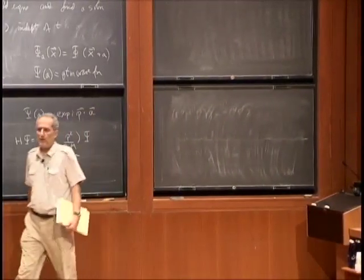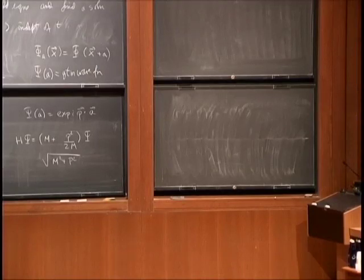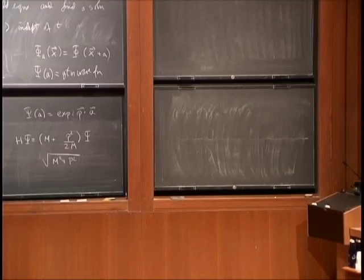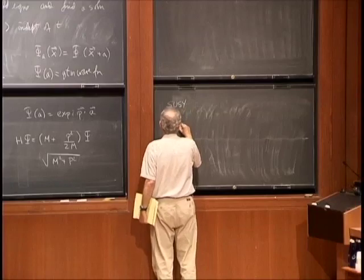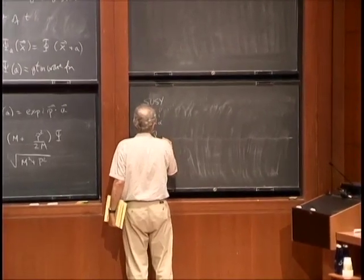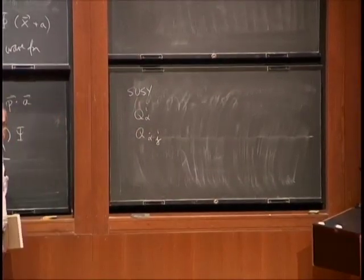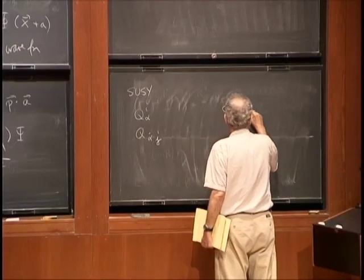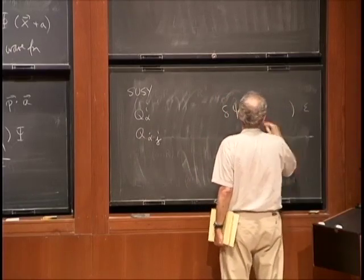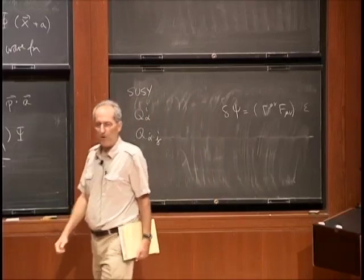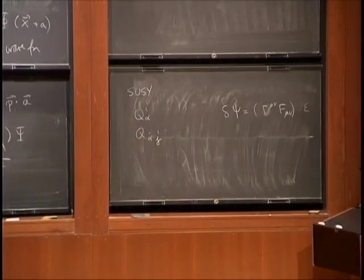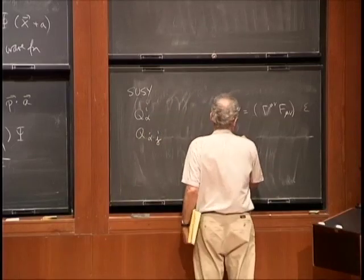The moral of the story is that there was no unique classical solution — there was a symmetry of spatial translations we had to take into account, and we're going to repeat this with supersymmetry. For definiteness, take our N equals 2 theory with eight supercharges. It has a supersymmetry transformation delta psi equals something. In six-dimensional notation, with mu and nu referring both to spatial indices and to internal indices corresponding to scalar fields.